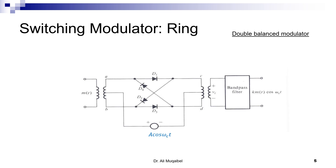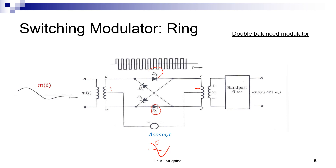The second type of switching modulator is the ring modulator. The shape of the connection is different and the carrier is connected in a different way. When the carrier is in its positive cycle, D1 and D3 are forward biased and connect, routing the signal from A to C and B to D. In the negative cycle, D1 and D3 switch off and D2 and D4 connect instead, which flips the sign of the output.